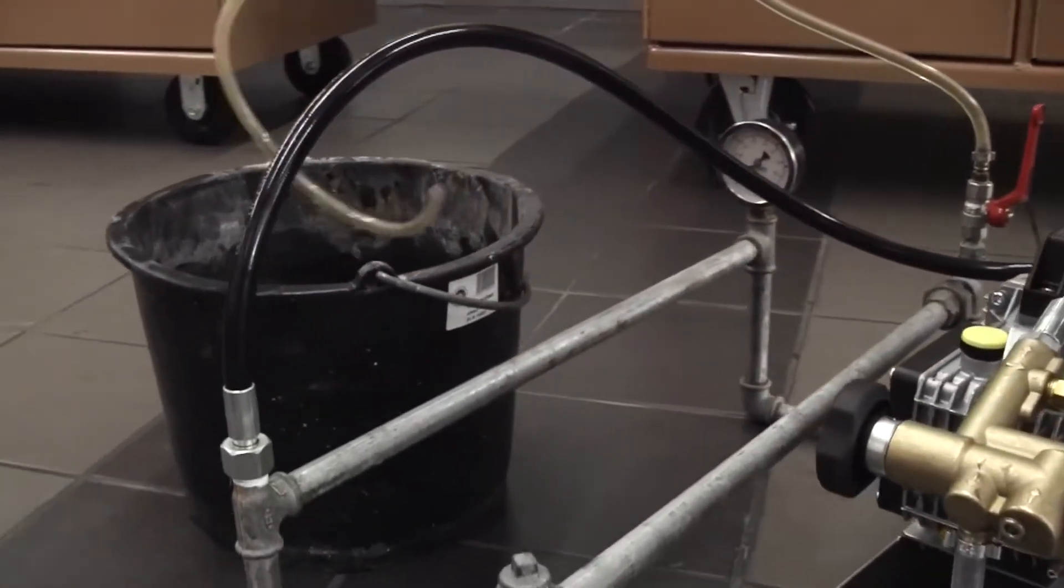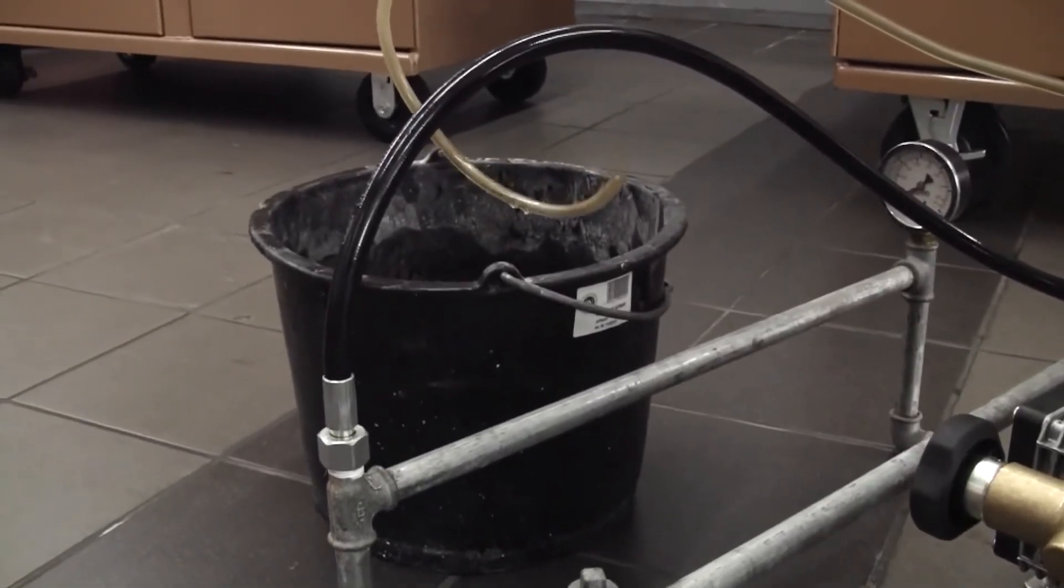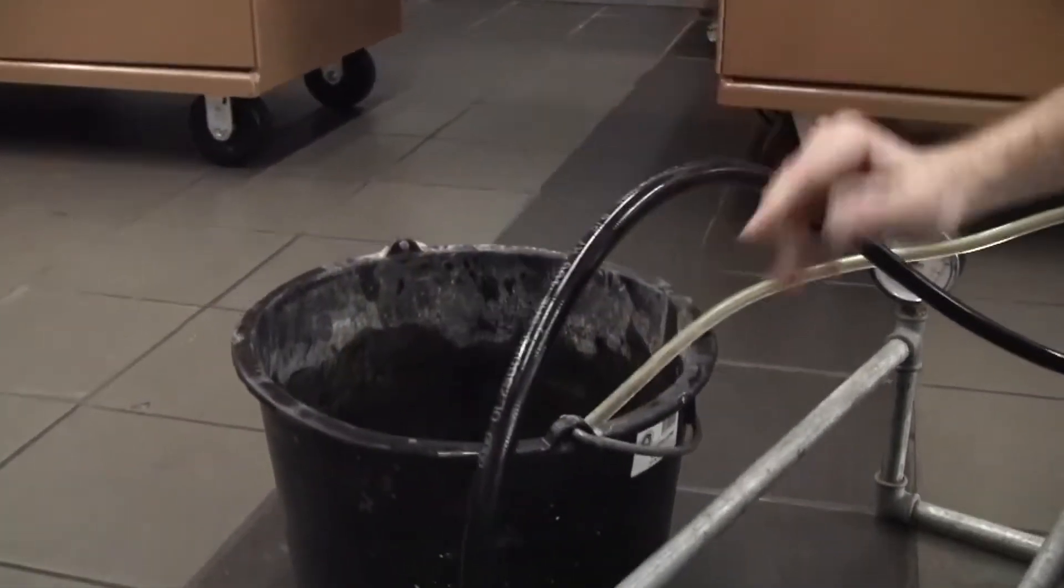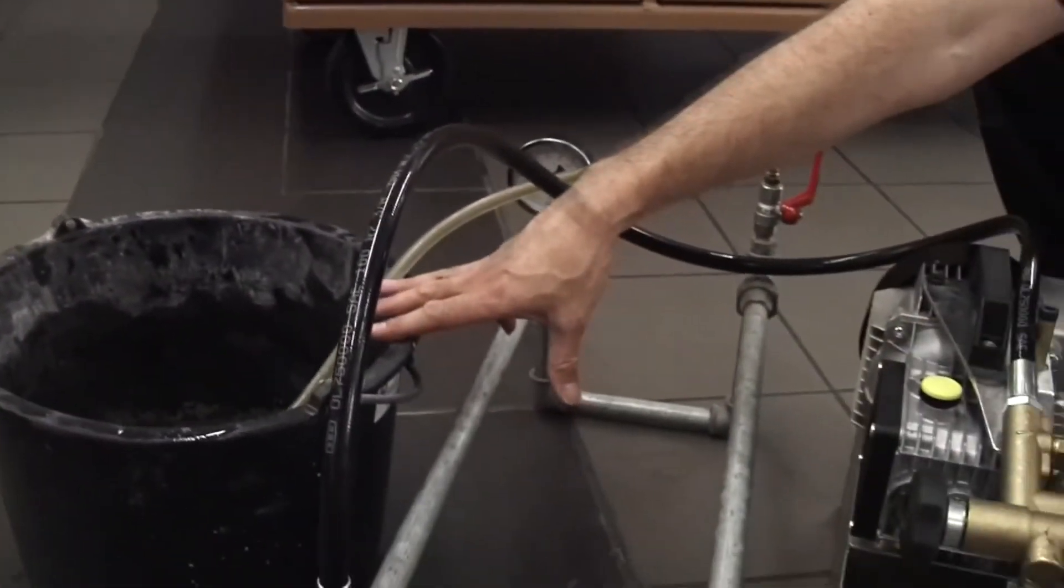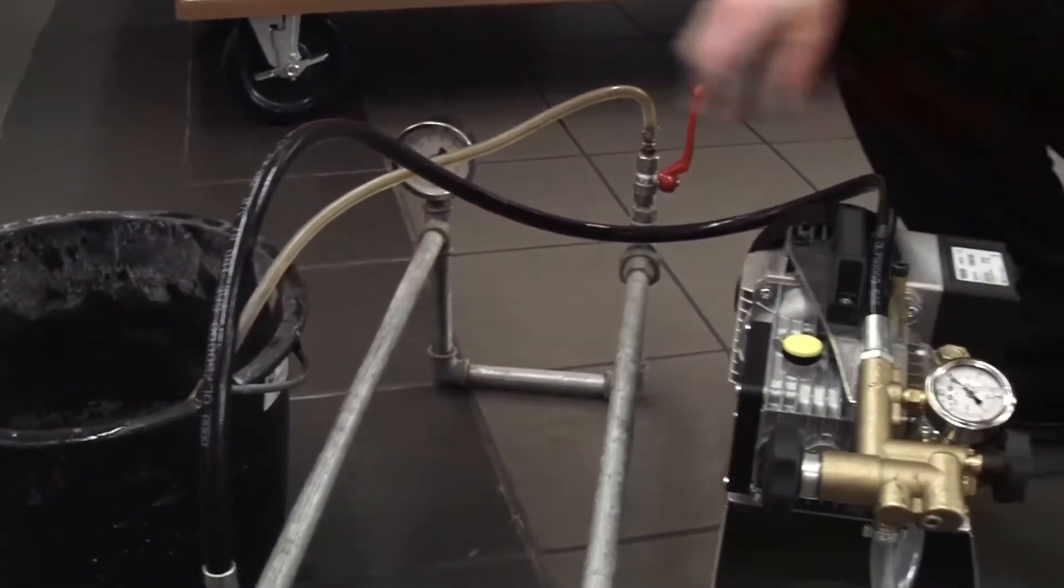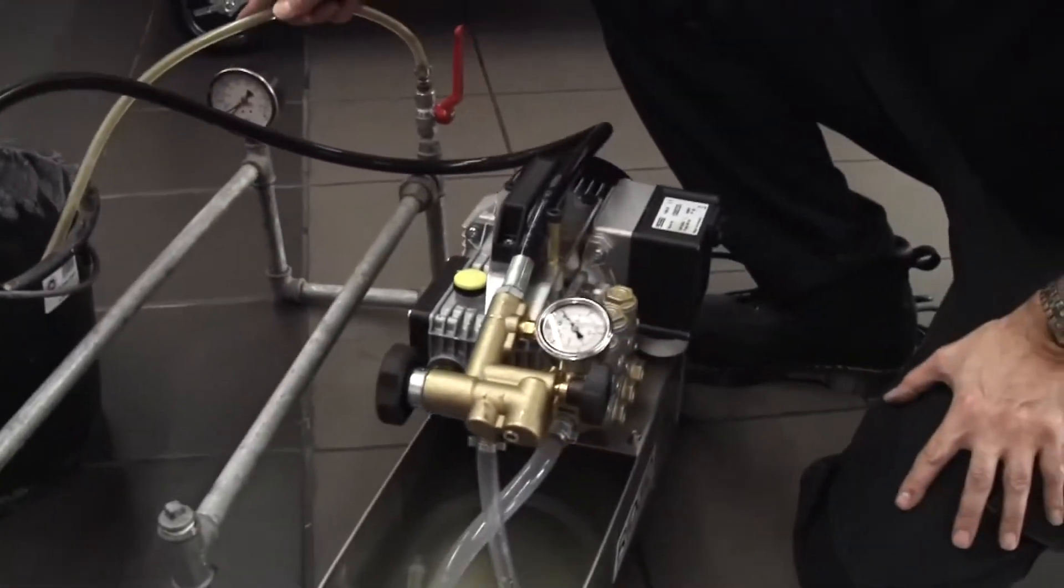Off the pipe work is just an outlet pipe to allow us to bleed the air out of the system and get some water into the bucket. So I'll run the pump up and we'll do exactly that. We'll take the air out of the system.